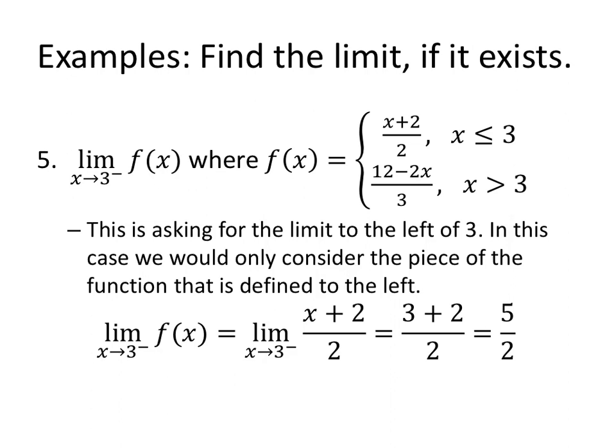A piecewise defined function. Find the limit as X approaches 3 from the left of f of X, where f of X is defined by X plus 2 over 2, when X is less than or equal to 3, and 12 minus 2X over 3, when X is bigger than 3. Now, this is asking for the limit to the left of 3. Left of 3, I'm going to use the top piece. I only consider the top piece because I don't care what's happening at 3. I care what's happening to the left of 3, and left of less than go together. So, I evaluate the limit as X approaches 3 from the left of X plus 2 over 2, which is 3 plus 2 over 2, which gives me 5 halves.